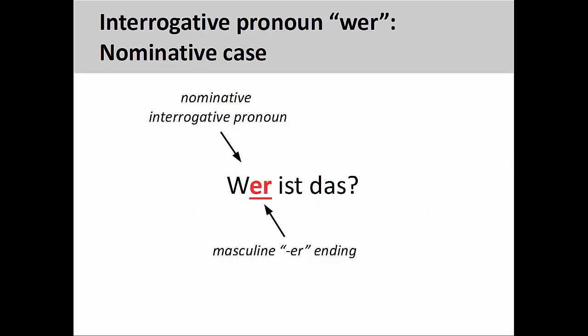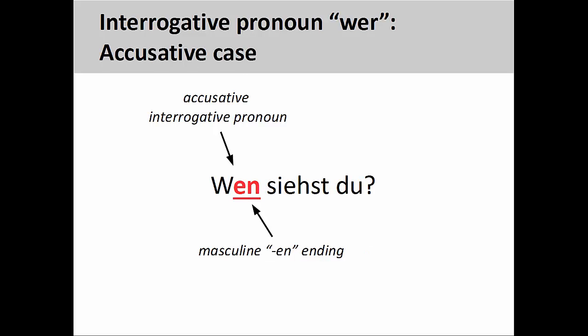The interrogative pronoun 'wer' (who) always takes a masculine ending. The -er ending here indicates that the pronoun is in the nominative case, and therefore acting as the subject of the sentence: 'Wer ist das?' — Who is that? The masculine -en ending indicates that the interrogative pronoun is the direct object of the verb, and therefore in the accusative case: 'Wen siehst du?' — Whom do you see?